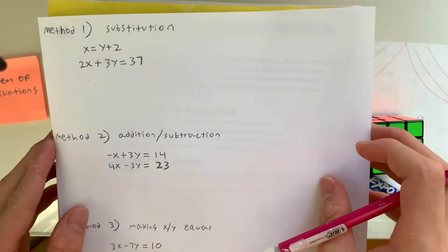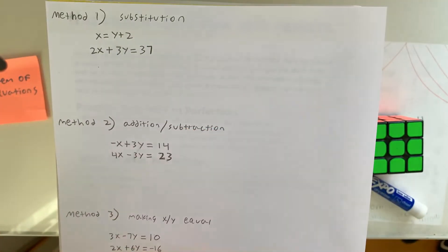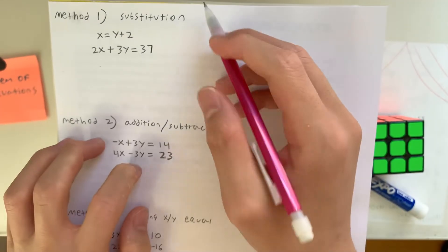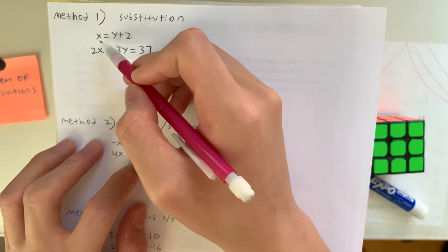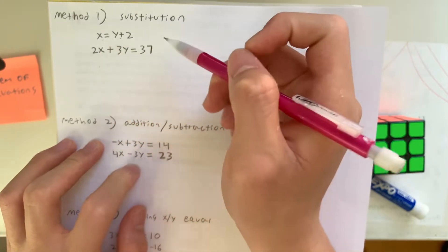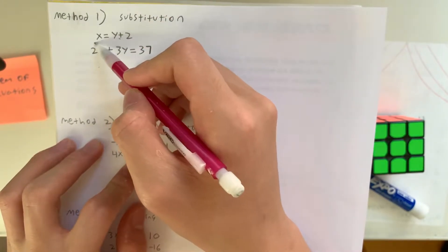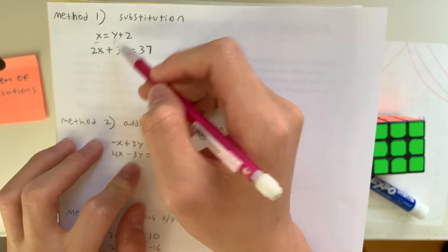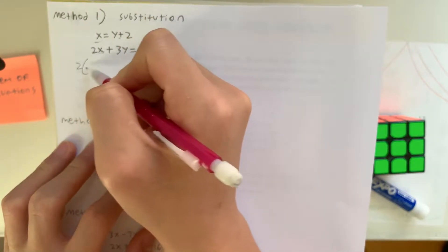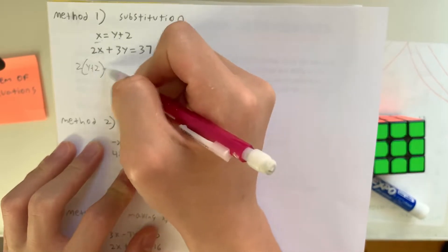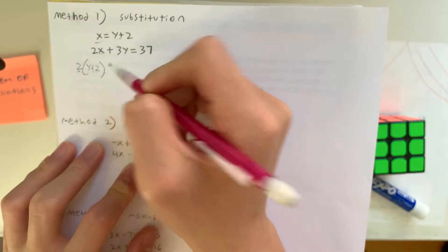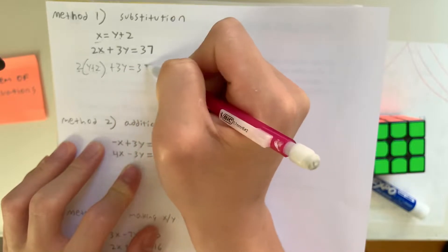So the first method that we have is called substitution. This is basically when you put one variable, x or y, in terms of the other variable. In this case, we have x in terms of y plus 2, so we can substitute this value in. So what is 2 times y plus 2? Because x is equal to y plus 2, we have 2 times y plus 2, plus 3y is equal to 37.